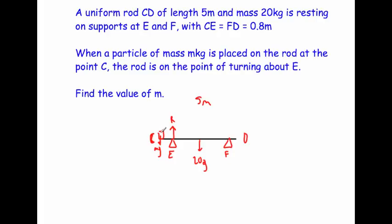Let's recap the diagram. You've got the weight in the center of the rod, the particle at the end, it's about to lift off support F so there's no normal reaction there, but there is a normal reaction at support E. The question asks: find the value of m, the mass of this particle.